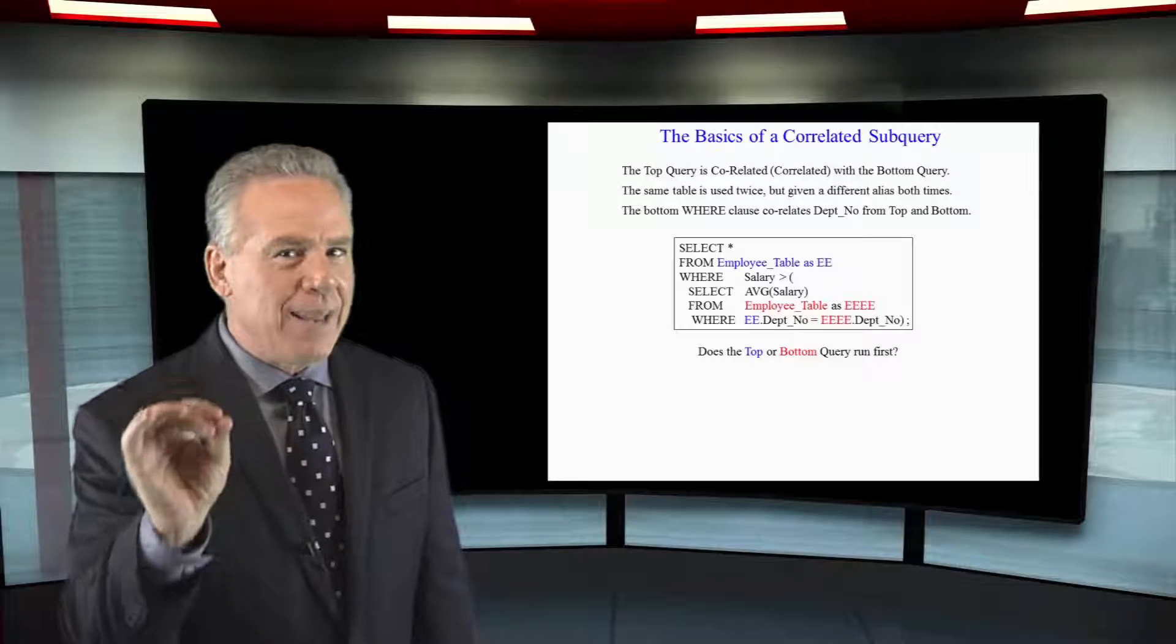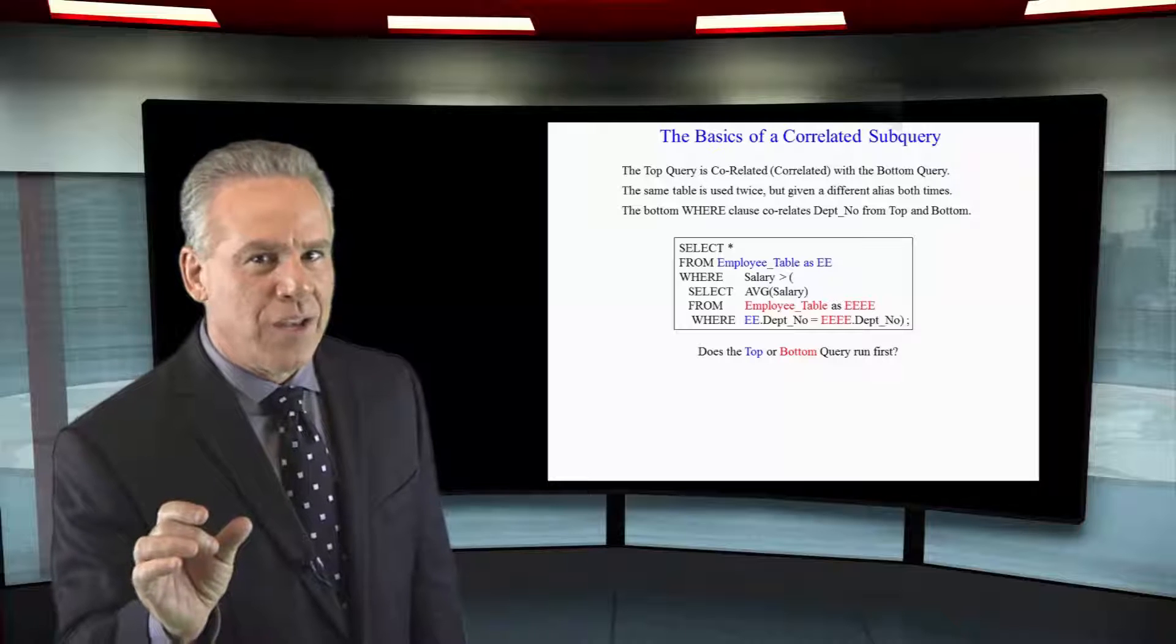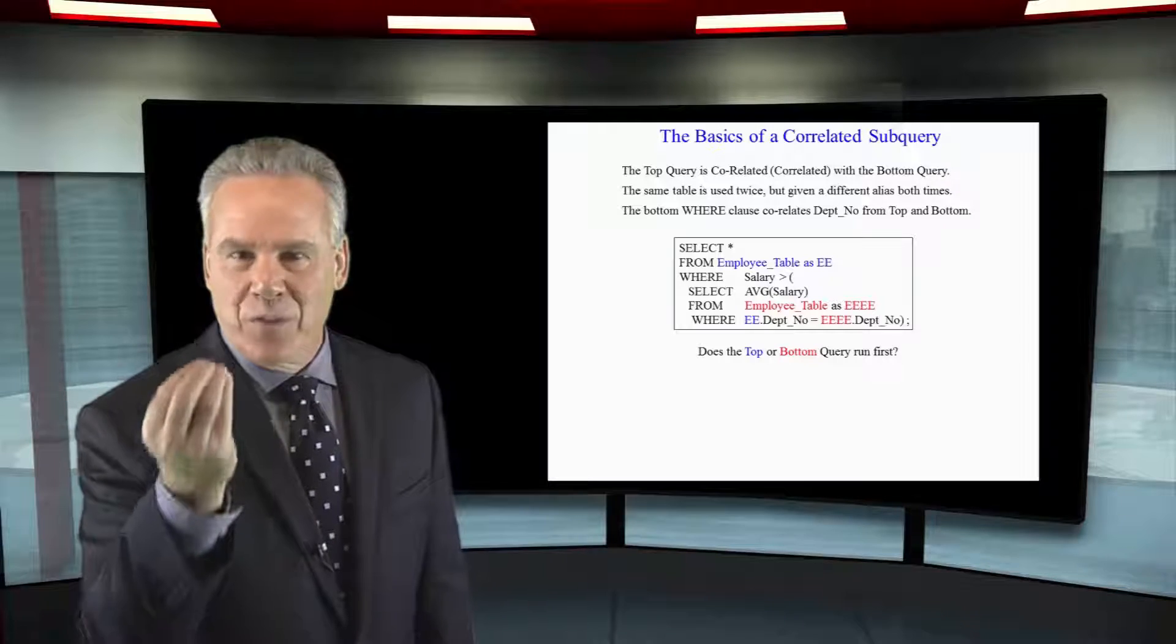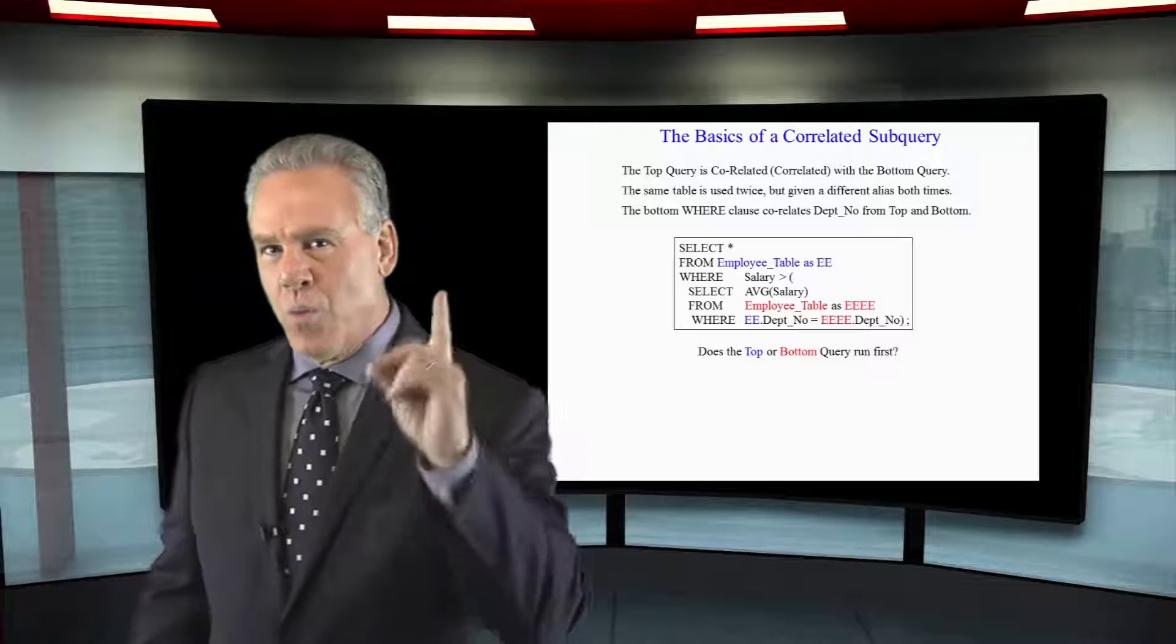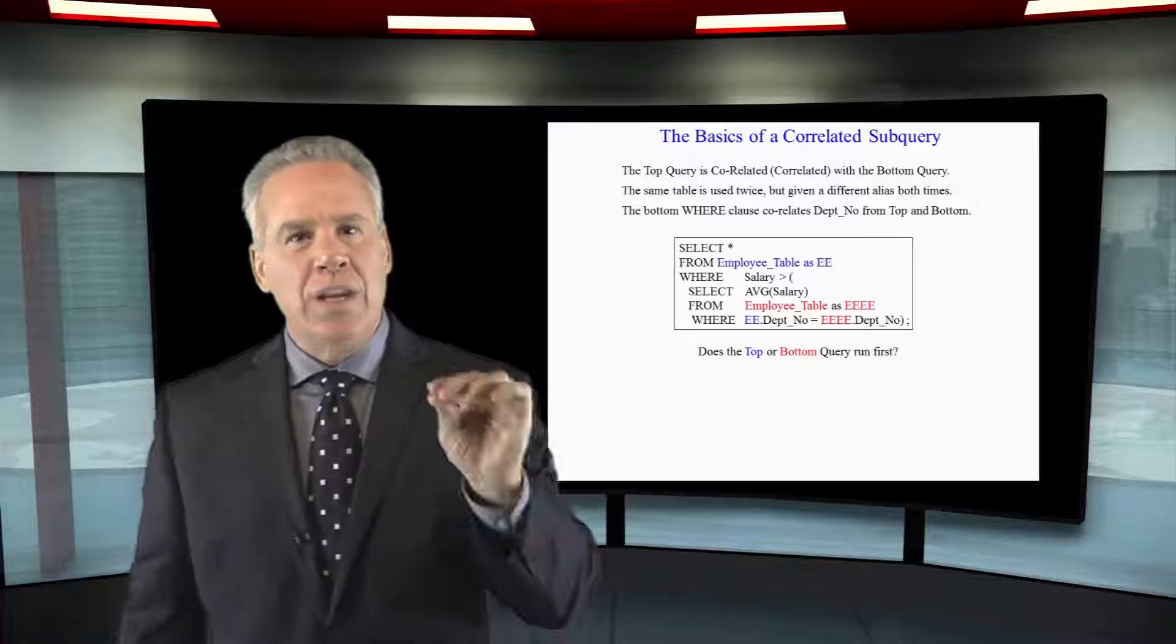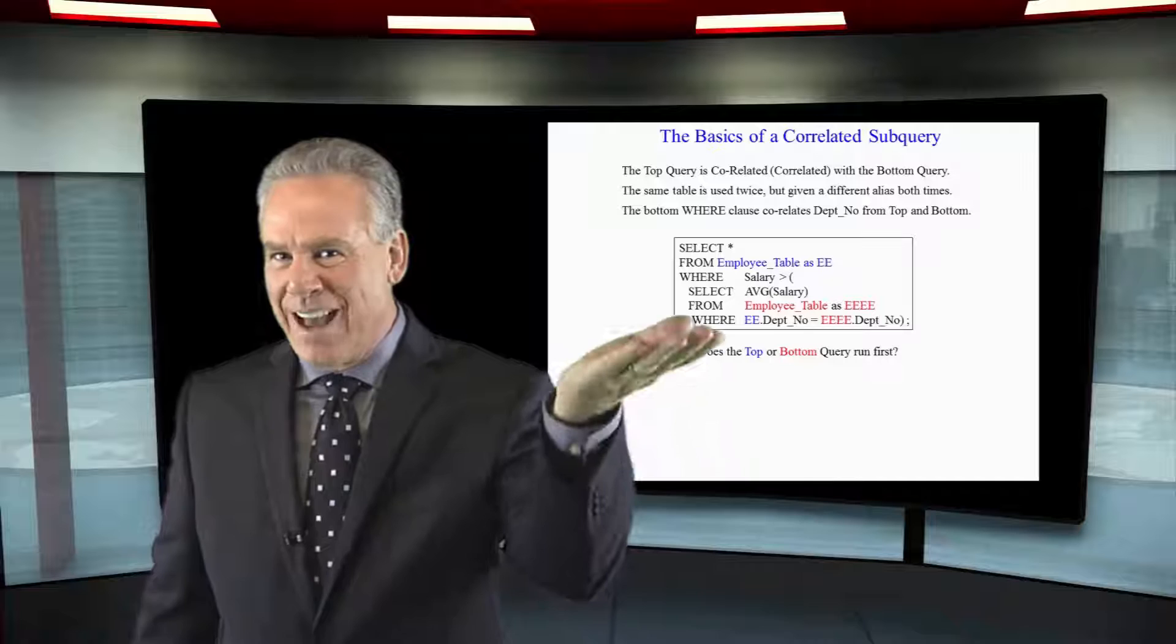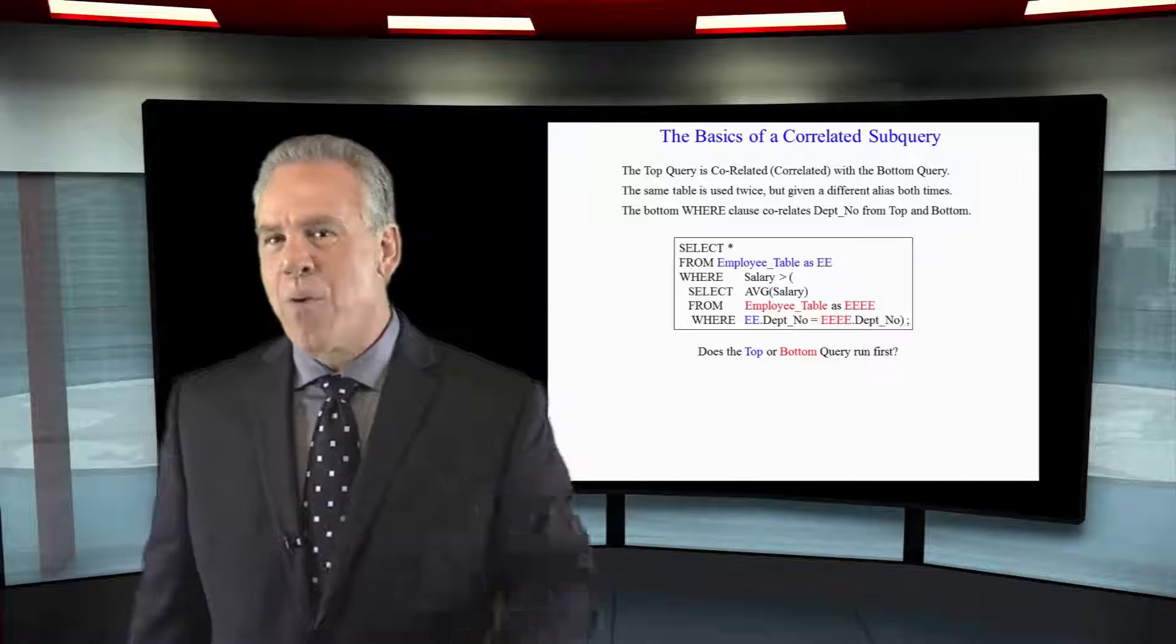And then they keep that number for the 400s department number in memory. So if they come across anybody else in department 400, they don't have to run the bottom query again. They will run the bottom query one time for each of the distinct departments that came from the top. That's how a correlated subquery works.